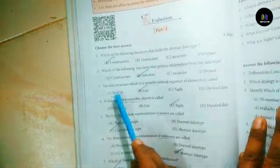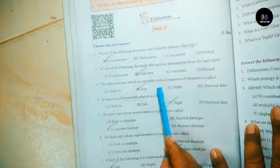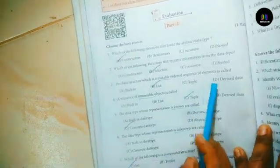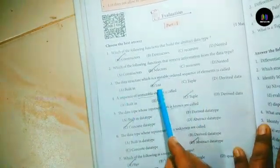Third one: The data structure which is mutable ordered sequence of elements is called? Answer B: List.